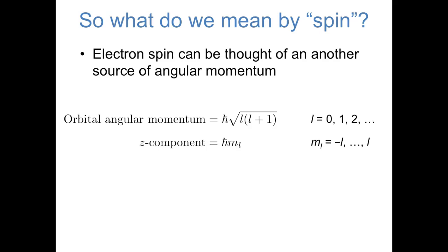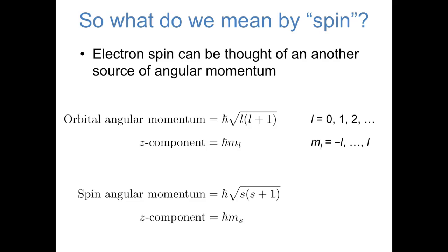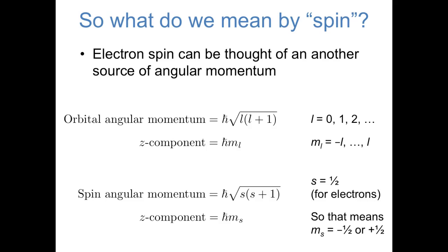There are constraints on these quantum numbers: l has to be a non-negative integer, and m sub l, because it represents a component of l, can only range from negative l to l. Spin angular momentum works in a similar way. The magnitude of an electron's spin angular momentum is h-bar times the square root of s times s plus 1, and one component of that spin is equal to h-bar times m sub s. For electrons, s always has the same value — 1/2 — so we never really talk about s. But we do talk about m sub s, because it can take on two different values, positive or negative 1/2. So any electron can have a spin quantum number of m sub s equals either positive or negative 1/2.